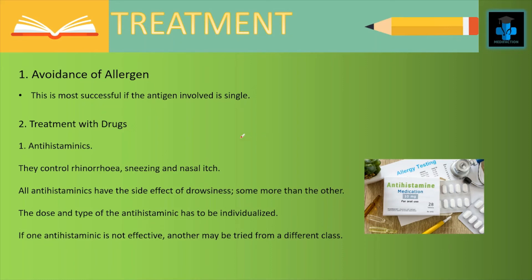The best treatment is to avoid the allergen, which is most successful if the antigen involved is single. Drug treatment options include antihistamines, which control rhinorrhea, sneezing and nasal itching. All antihistamines have the side effect of drowsiness, some more than others. The dose and type of antihistamine has to be individualized; if one antihistamine is not effective, another from a different class may be tried.